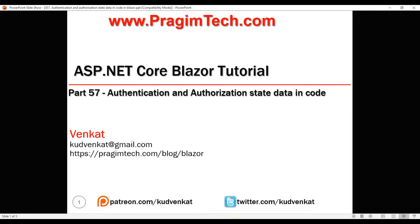This is part 57 of the Blazor tutorial. In our previous video, we discussed how to use the authorize attribute to authorize access to routable components — that is, components with an @page directive. We did this by using the authorize attribute in the component HTML.